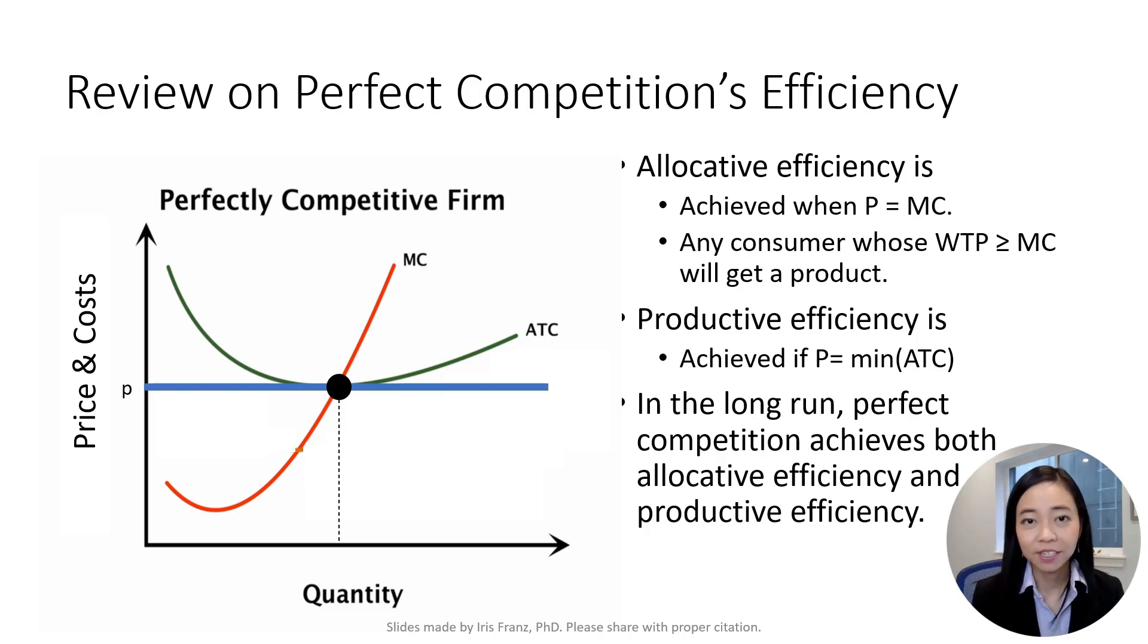When the price is equal to the marginal cost, then we have allocative efficiency. Meaning, anyone whose willingness to pay is greater than or equal to the marginal cost, which is also equal to the price, will be able to get a good or service.